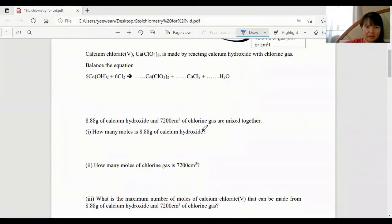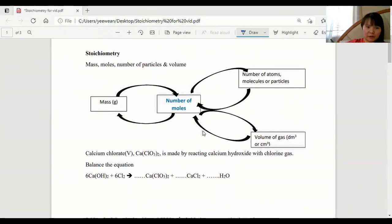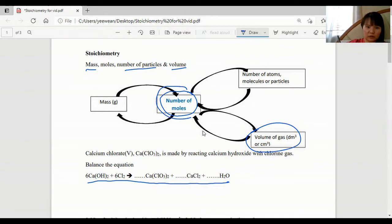In exams, you might get questions that give you information about mass, number of particles, volume, or concentration. All of these need to be converted to number of moles first before you can use the stoichiometric equation to find the percentage of yield or purity or the volume of products.